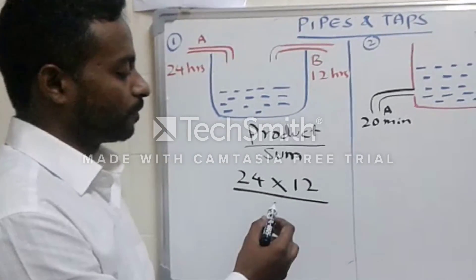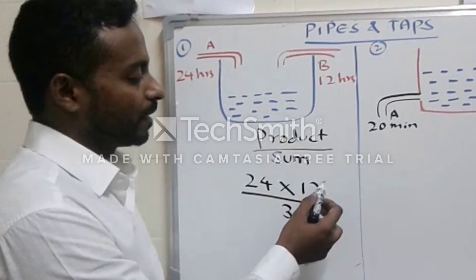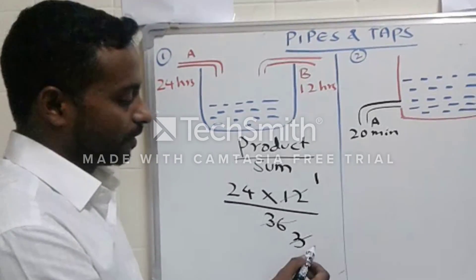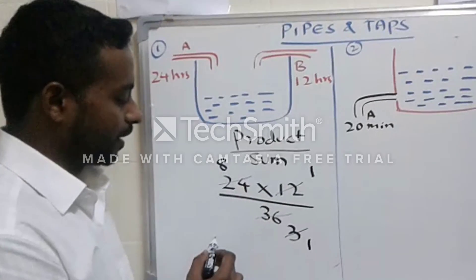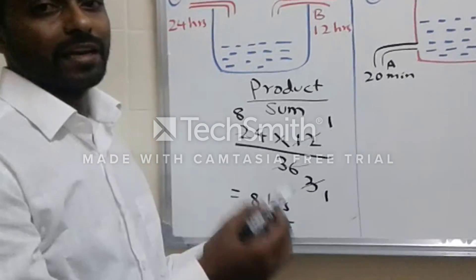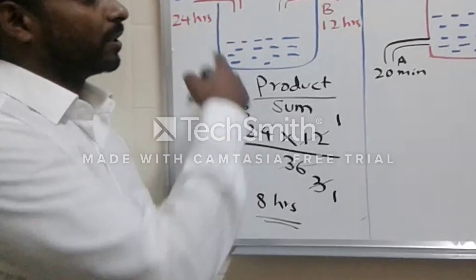24 plus 12 will give me 36. Simplify it to make it simpler: 12 times 1 and 12 times 3, then 3 times 1 and 3 times 8. It means if we run both the pipes simultaneously, in 8 hours it will fill the tank.